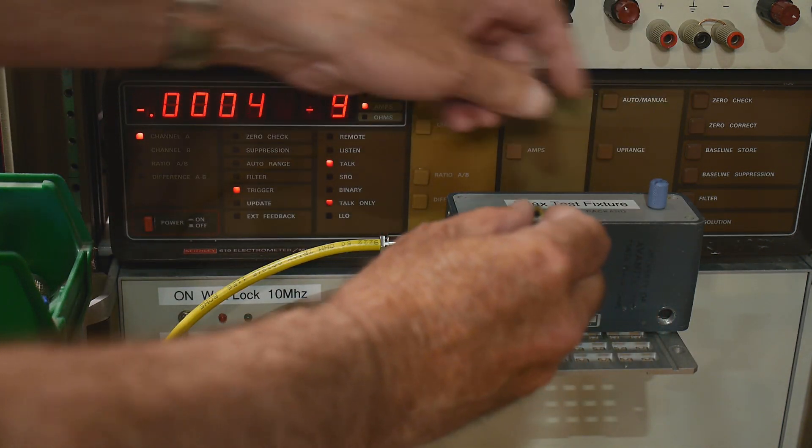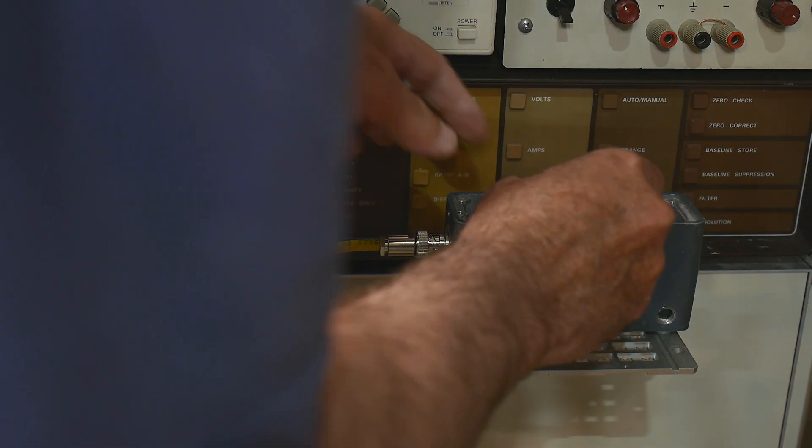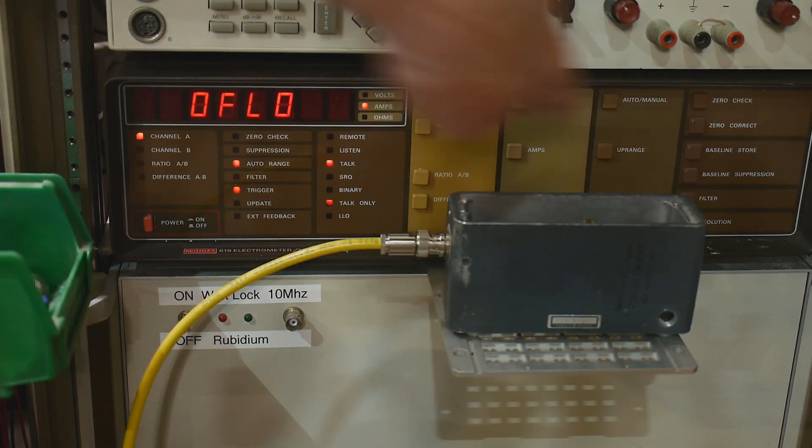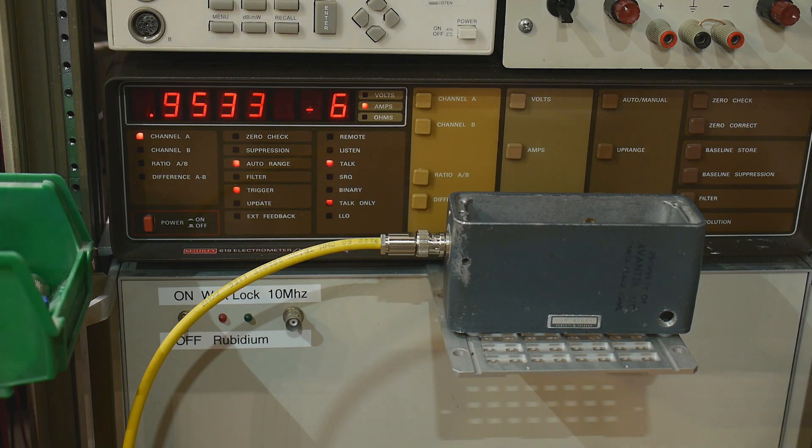This is an actual photodiode. This is a large area photodiode, and I'm going to put this on auto. So we're measuring 0.9 microamps, and it's fairly dark in the room right now.